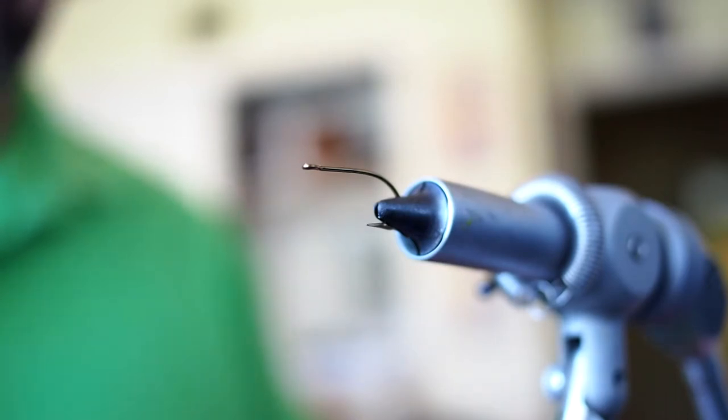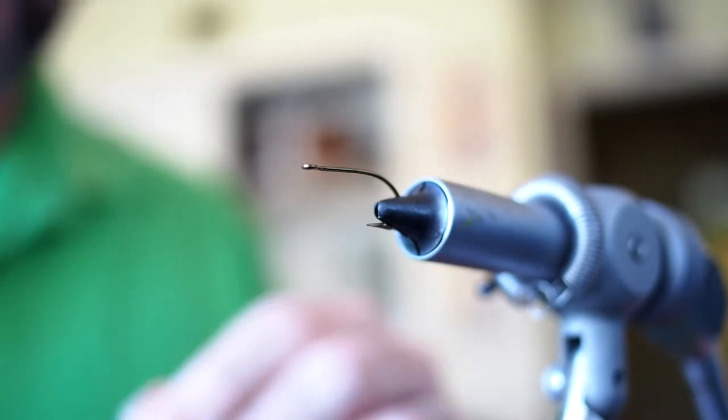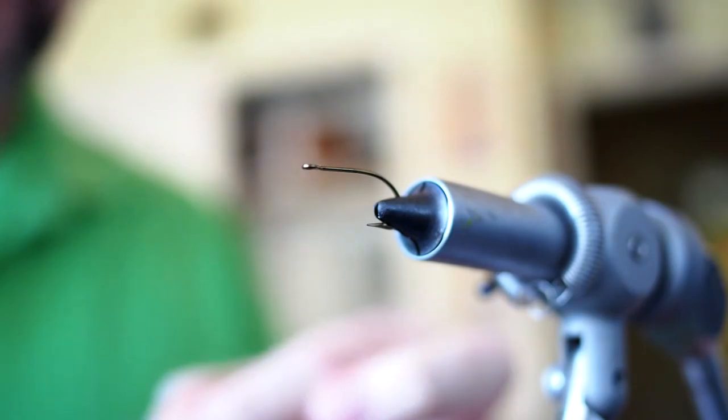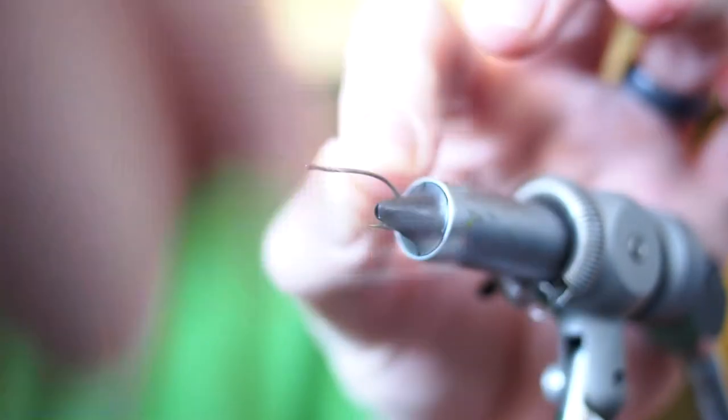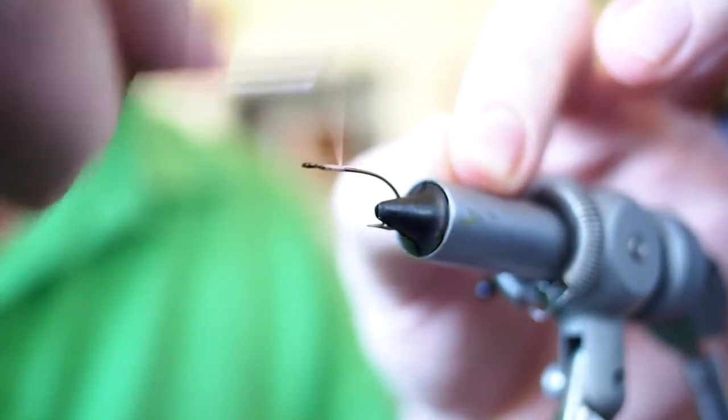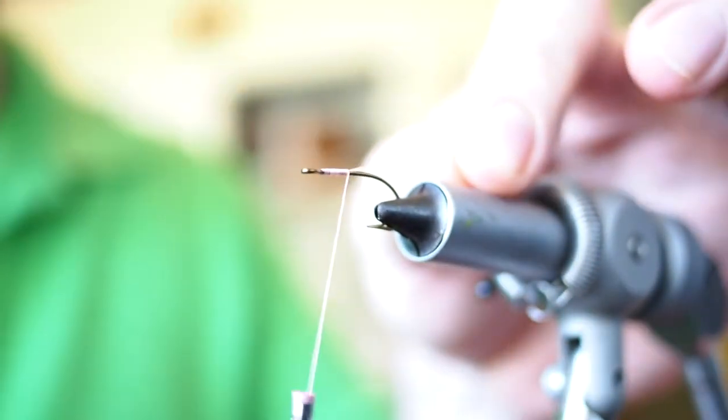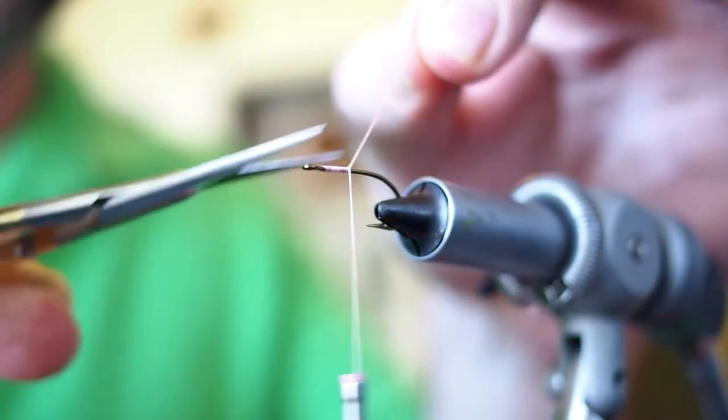First, we're going to lay down a base of thread. These are quick flies to tie and you're going to lose them, so you don't have to go nuts. I usually just thread wrap about halfway down the shank, then cut our tag.